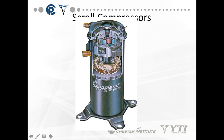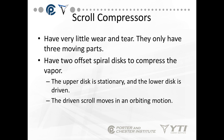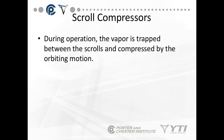You have a blue and red scroll. Those components rotate in more of an elliptical pattern back and forth, squeezing the refrigerant through the scroll until the high-pressure refrigerant comes out of the top. The scroll has very little wear and tear — it really only has three moving parts. The upper disc is stationary and the lower disc is driven. The driven scroll moves in an orbiting motion connected to an off-center or eccentric motor. During operation, the vapor is trapped between the scrolls and compressed by the orbiting motion.